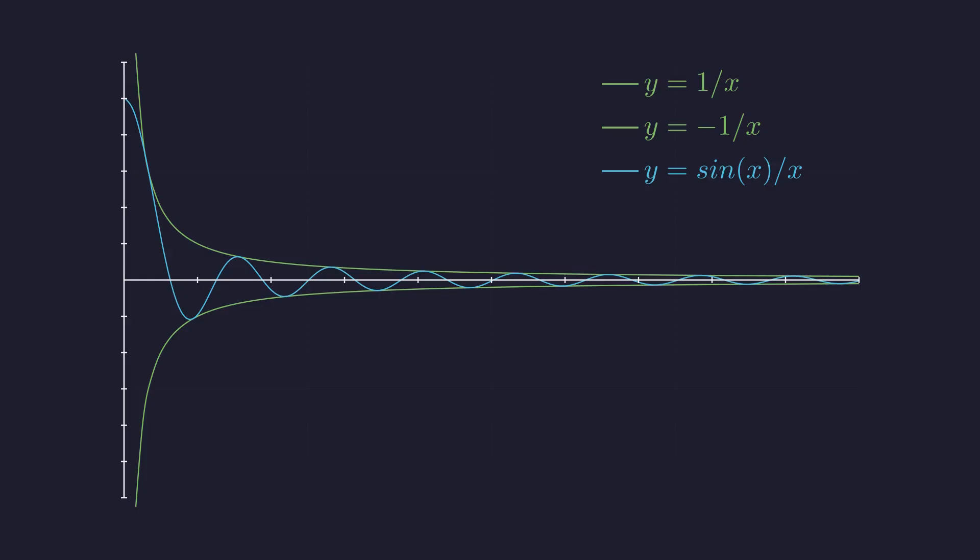And here's sine x over x. Look at it oscillating, trying to escape, but the amplitude shrinks with every wave. It's fighting infinity and losing. As x goes to infinity, the function has nowhere else to go. It's squeezed tighter and tighter towards a limit of zero. A beautiful visual proof.